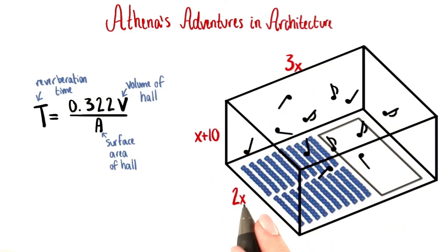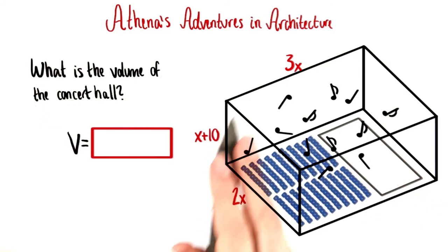It's not super important right now what x stands for, but just so you know, it's the depth of the stage back here. This is how long x is. Considering each of these lengths, what is the volume of our concert hall?